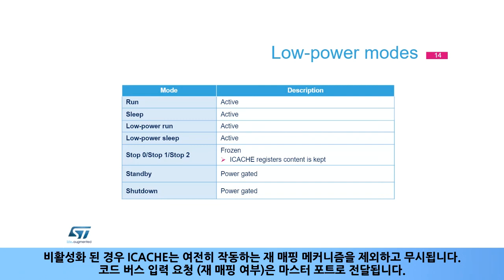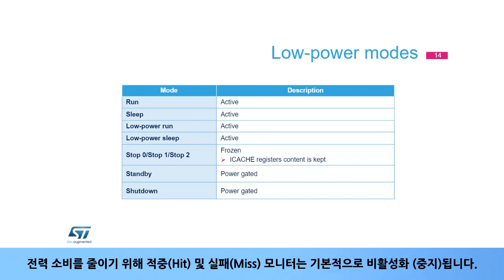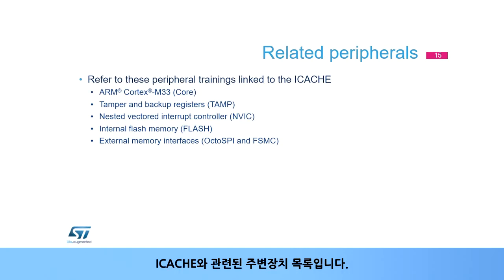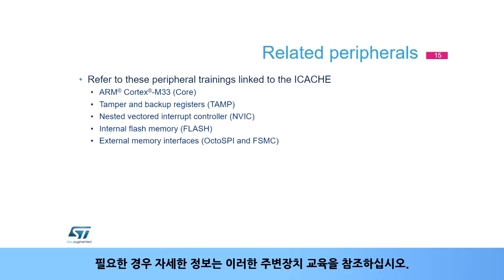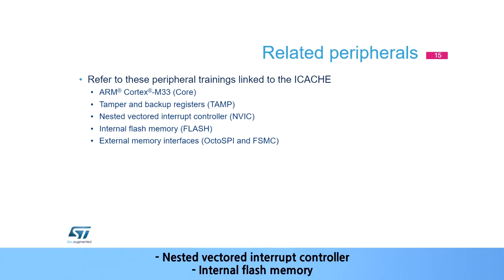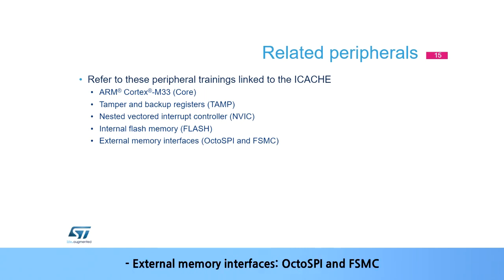The code bus input requests, remapped or not, are just forwarded to the master ports. To reduce power consumption, the hit-and-miss monitors are disabled by default and are to be used only during code debug and optimisation. This is a list of peripherals related to the iCache: Arm Cortex-M33, tamper and backup registers, nested vectored interrupt controller, internal flash memory, external memory interfaces OctoSPI and FSMC. Please refer to these peripheral trainings for more information if needed.